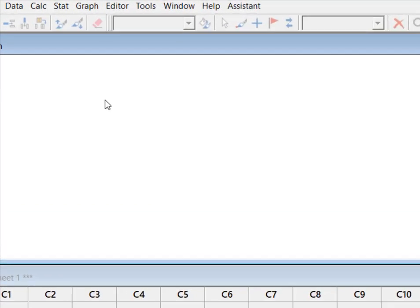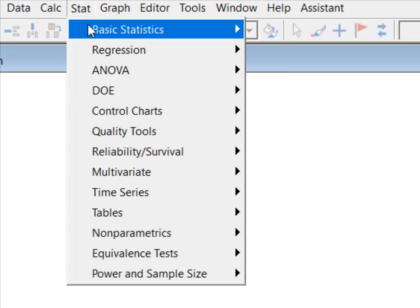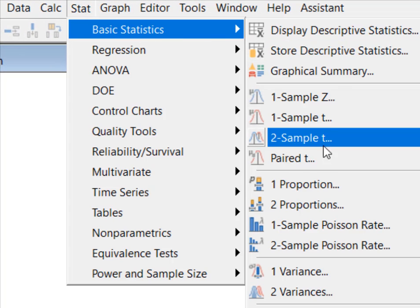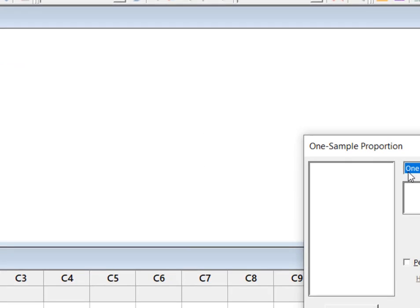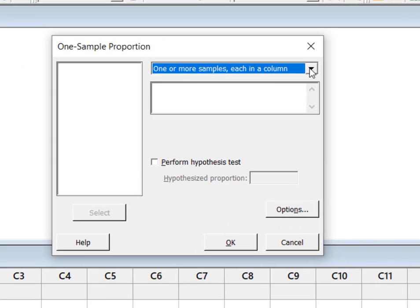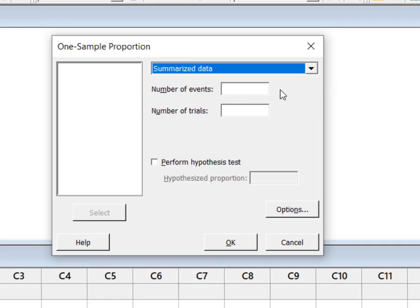Now I'm in Minitab. We're going to go to Stat, Basic Statistics, and test for one proportion. We have summarized data, and Minitab wants to know the number of events—that's our value of x, which was 45 out of our number of trials, n equals 65.